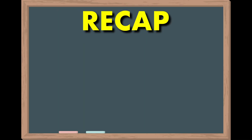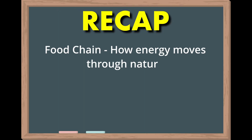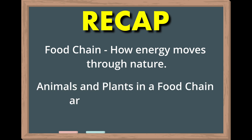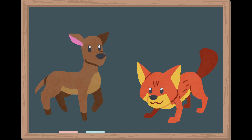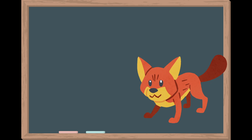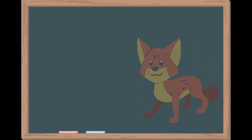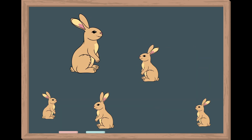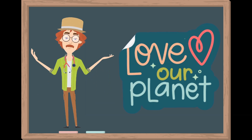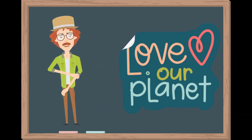Let's recap. A food chain is a line of who eats who — it is energy flowing through nature. When one part is missing or broken, the animals, and even plants, can be affected. If prey disappears, predators suffer. If predators disappear, prey can grow out of control. That's why every piece of nature matters.